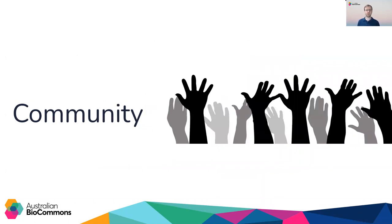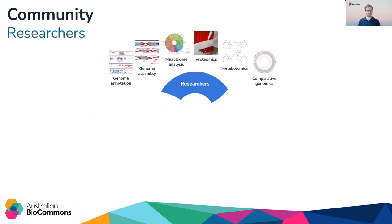The BioCommons is built on our communities. This means the requirements and challenges of our communities define our approach to bioinformatics infrastructure. Our communities can be split into three broad groups. The first are the researchers, and typically we will create or align with researcher communities of practice for domains like metabolomics or proteomics, or for a specific end goal in bioinformatics like genome assembly or genome annotation.